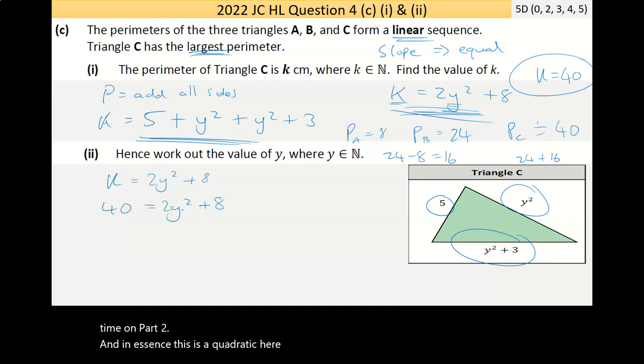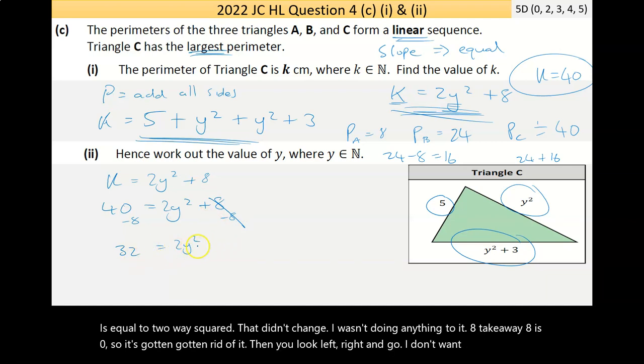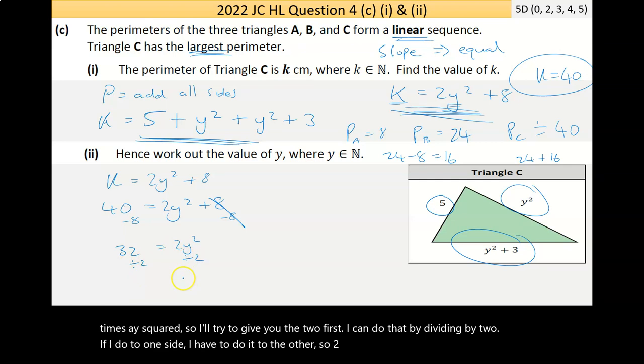Now, I'll need this statement here. k is equal to 2y squared plus 8. I know that k is 40. That's what I was actually supposed to do. And in essence, this is a quadratic here. Let's simplify this a little bit. I want to find out what y is. So y should stay where it is. I'm going to take 8 away from here. 40 take away 8 is 32 is equal to 2y squared. Then I'll divide by 2. 2 divided by 2 cancels to give y squared is equal to 32 divided by 2 is 16.